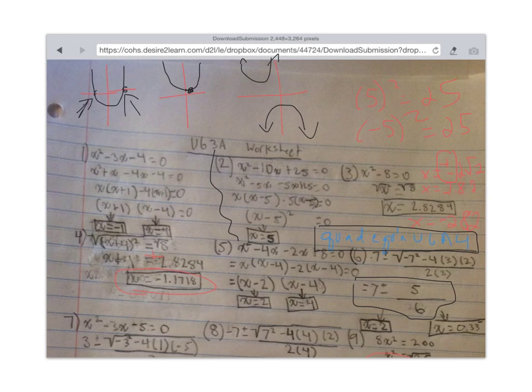The same thing happens in number 4. You've got the square root of 8 again. And so when you take the square root of both sides, you need a plus and minus situation.